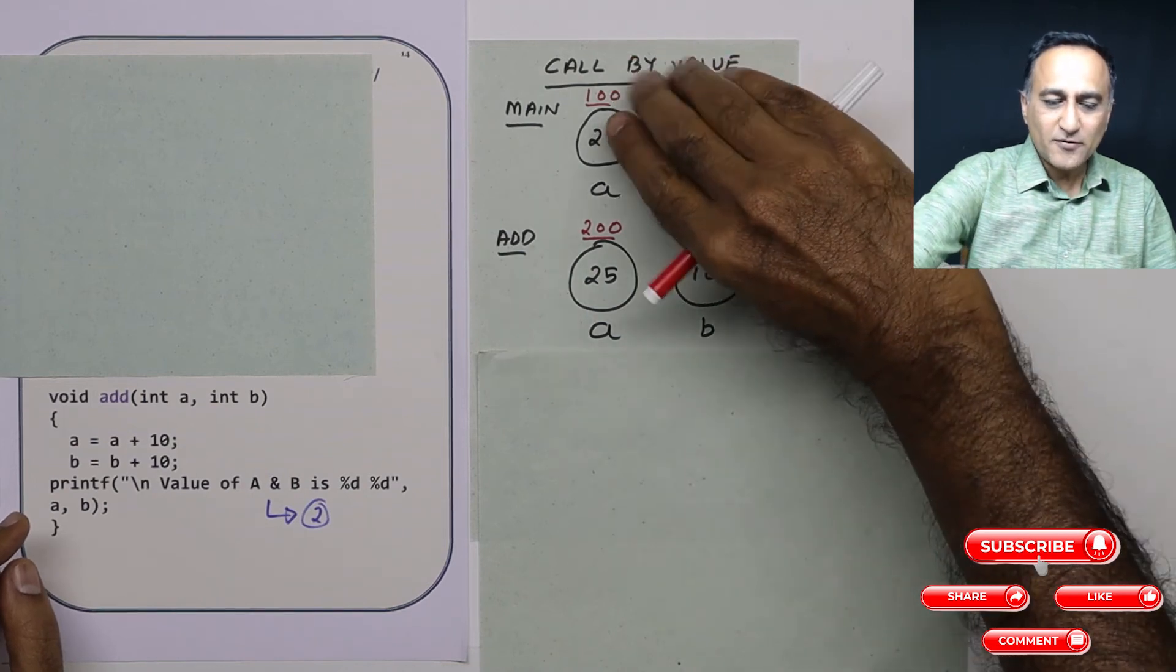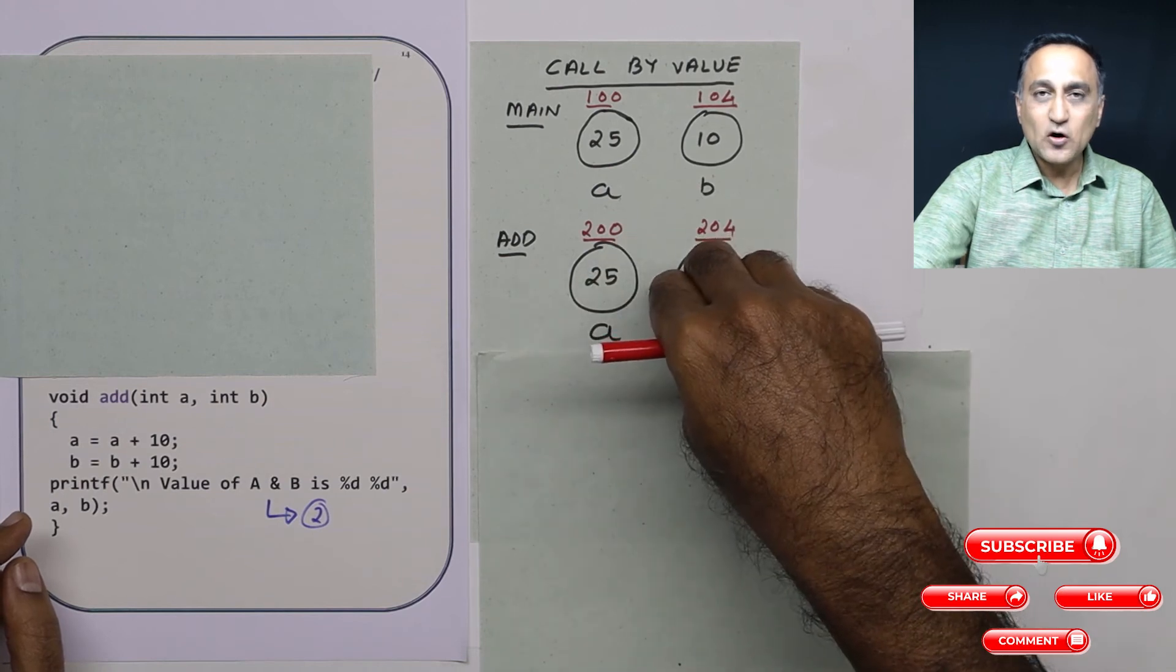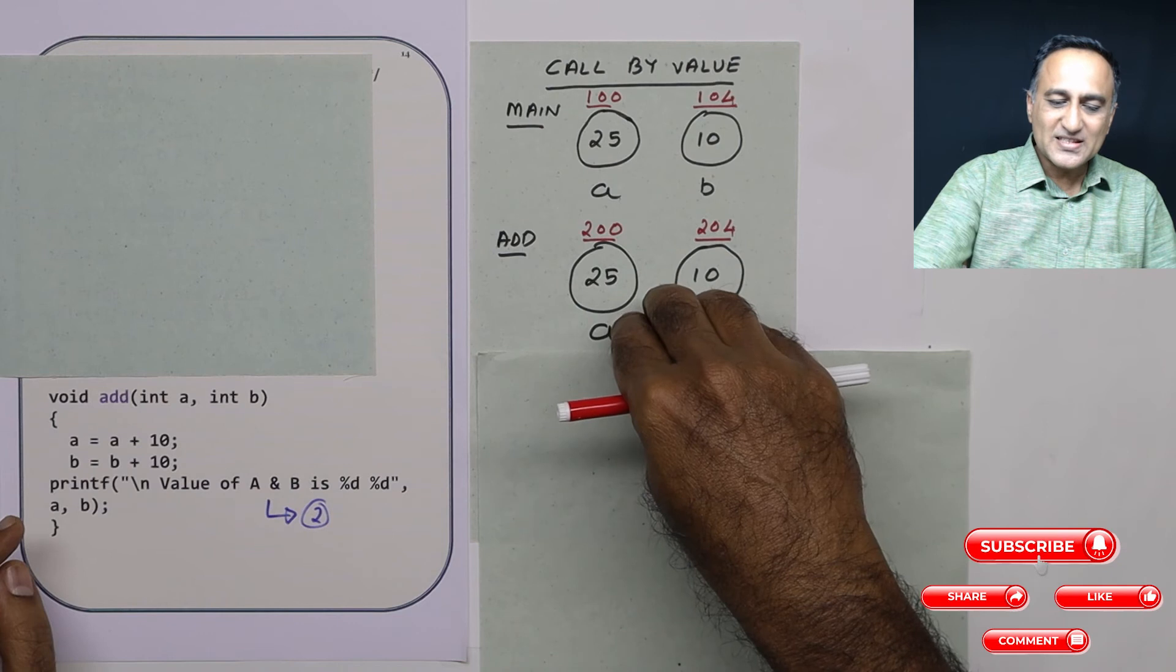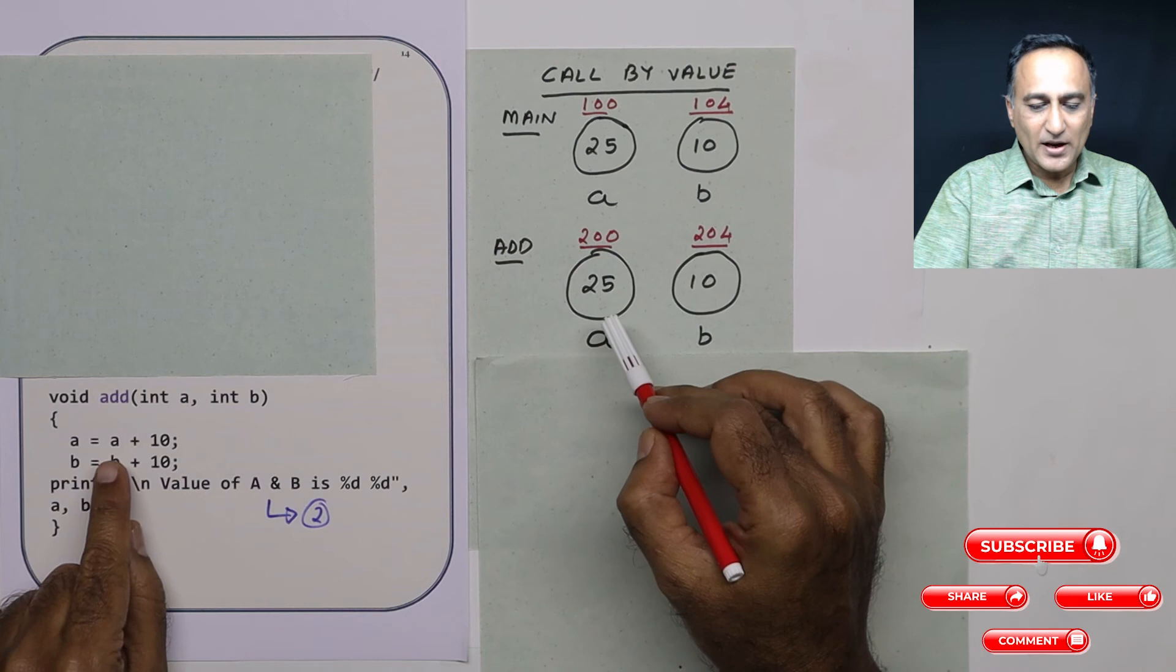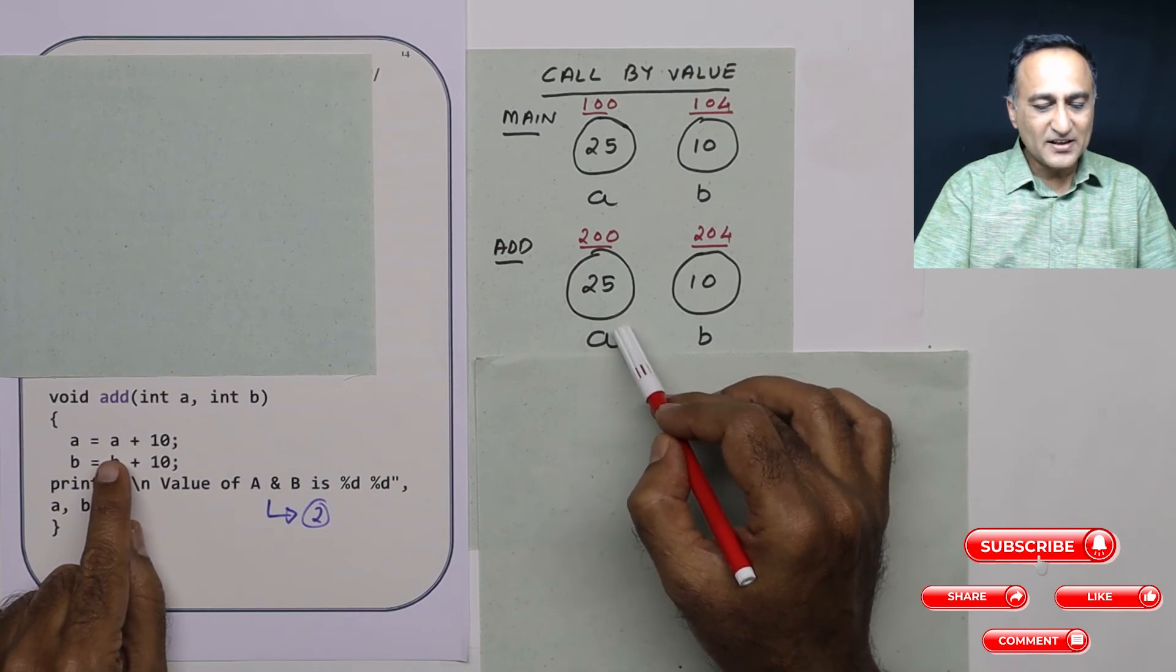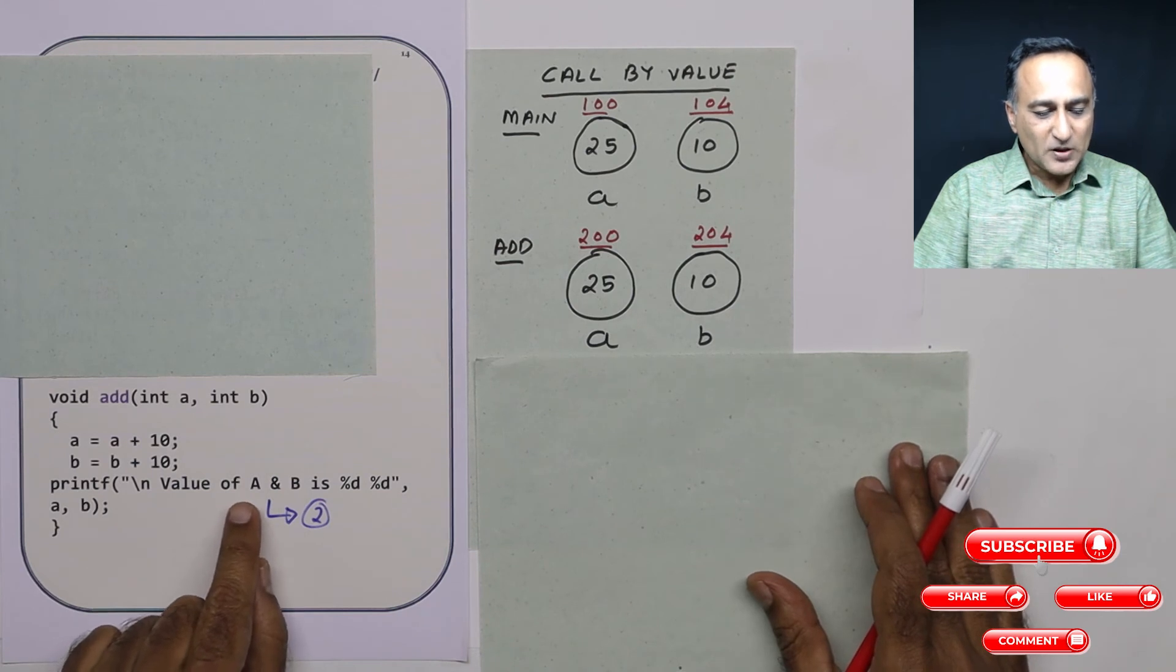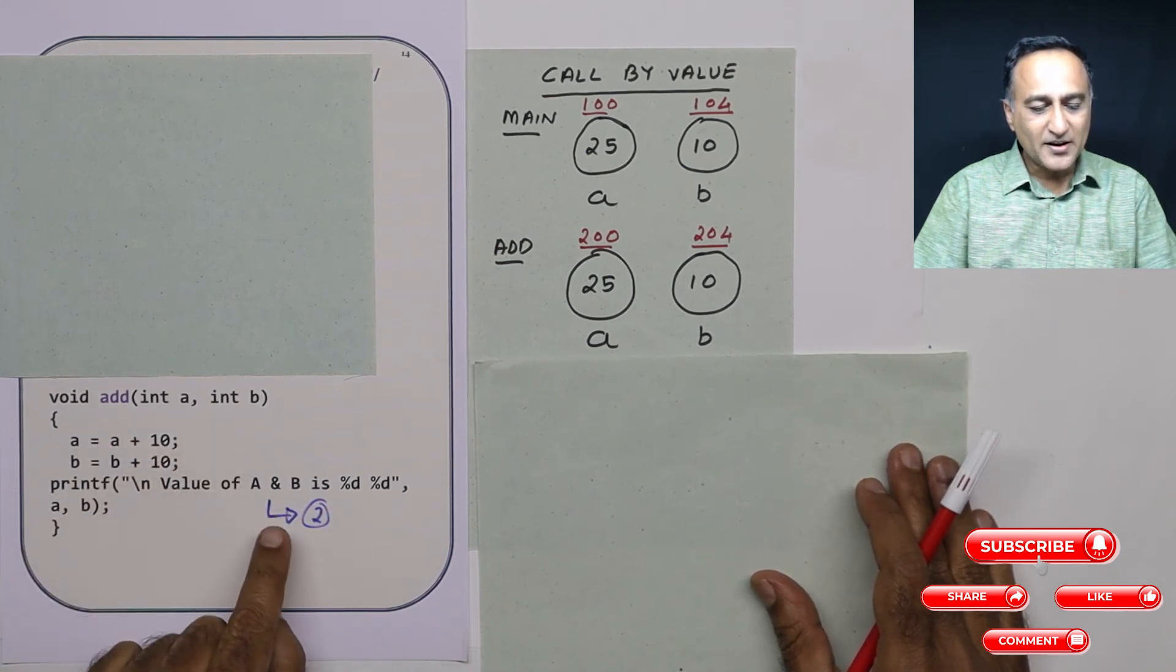You can think of this as the original a, b existing in main; this a, b are copies of a and b from main. If you destroy this, the original does not get affected. Here I'm increasing the value of a by 10, making it 35, and b by 10, making it 20. When I print the value of a and b in add, it is going to print 35 and 20.